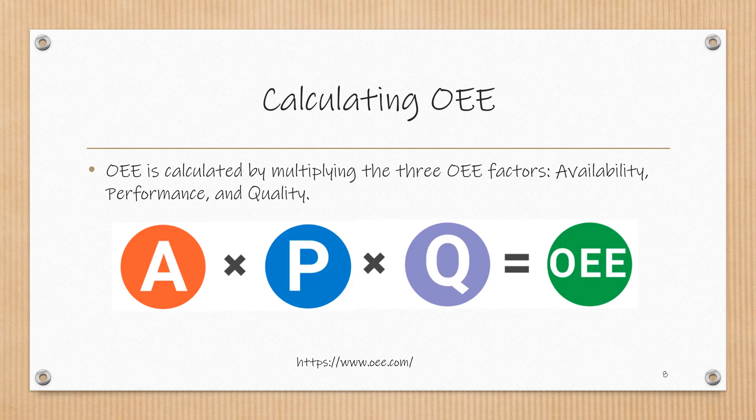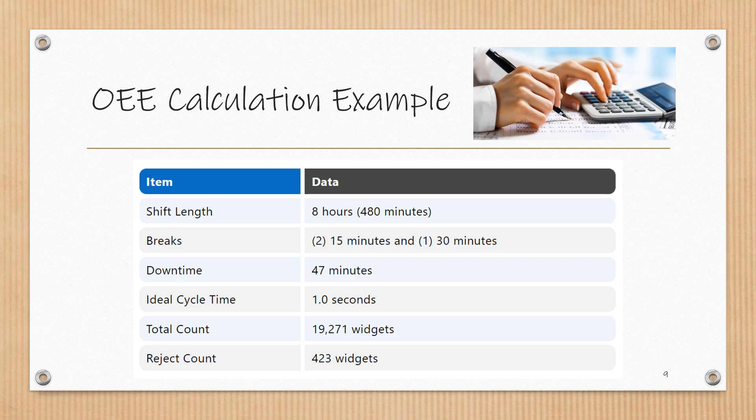Now let's work through an example to illustrate how the OEE metric is calculated. Assume the following data is recorded over a production shift: the shift length is eight hours or 480 minutes, there are two 15-minute breaks and one 30-minute break for a total of 60 minutes, a total of 47 minutes of downtime is experienced, the ideal cycle time is one second, the total count is 19,271 units, and 423 of these are rejected.